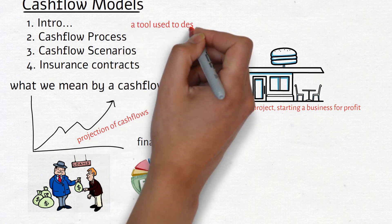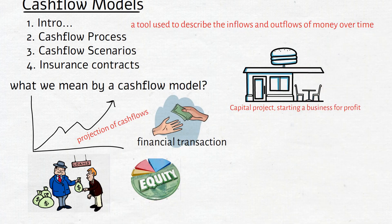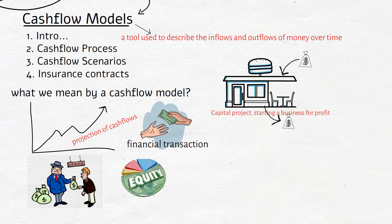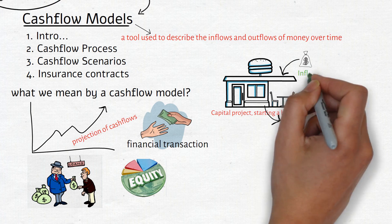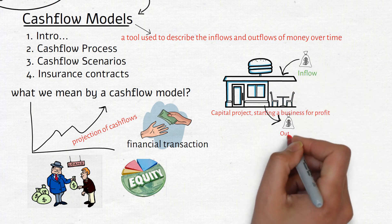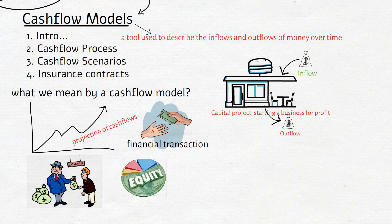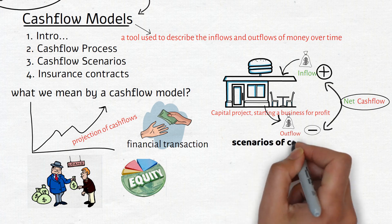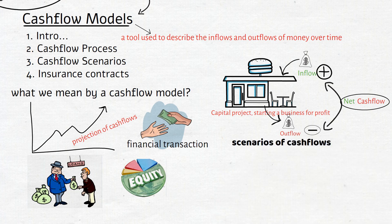In simple terms, a cash flow model is a tool used to describe the inflows and outflows of money over time. It can be used to track the flow of money in a business, an investment, or any financial transaction. Payments received are referred to as income and are shown as a positive cash flow. Payments made are referred to as outgo and are shown as negative cash flows. The net cash flow at a given point in time is just the difference between income and outgo.